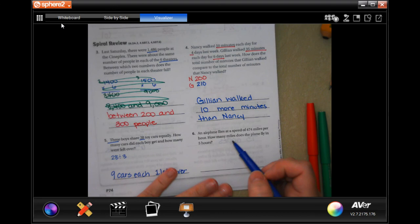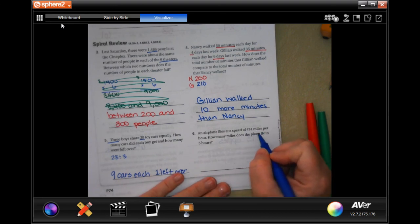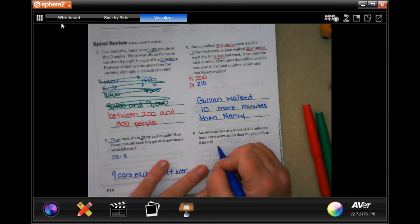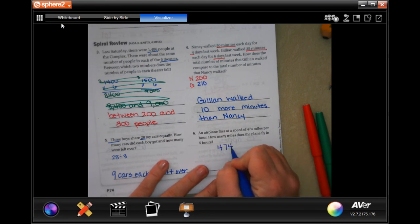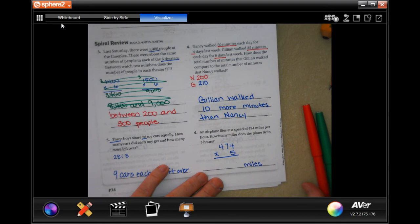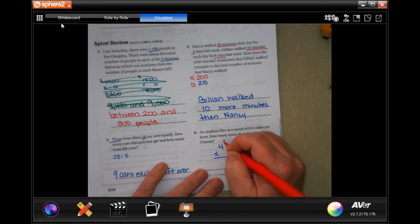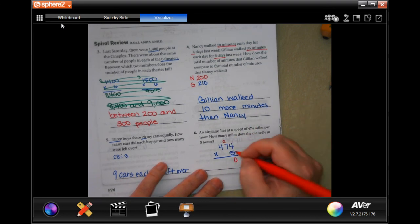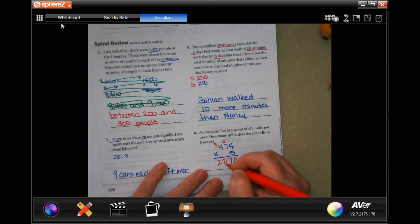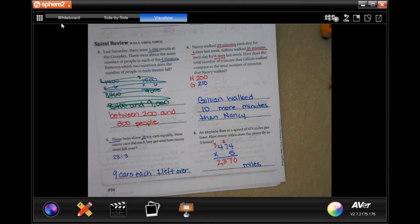An airplane flies at a speed of 474 miles per hour. How many miles does a plane fly in 5 hours? So, 474 times 5. And whatever it is, it's going to be in miles. 5 times 4 is 20, carry that 2. 5 times 7 is 35, plus 2 more is 37. Carry the 3. 5 times 4 is 20, plus 3 is 23. 2,370 miles.